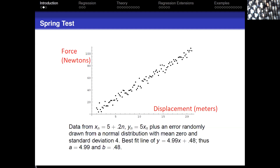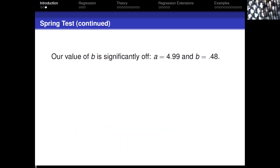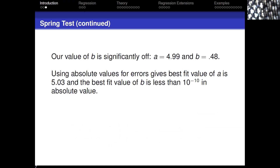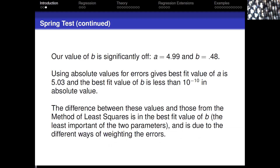There's more than one way to decide what you want your best fit line to be, and depending on which method you choose you will get different answers. Our value of b is significantly off. If instead we use absolute values, we get a slope of 5.03 and an intercept less than 10^{-10} — so the question is: which is the best way to measure error?